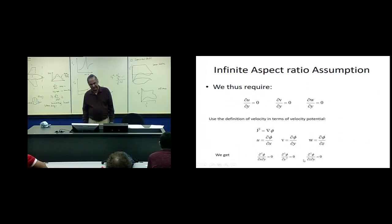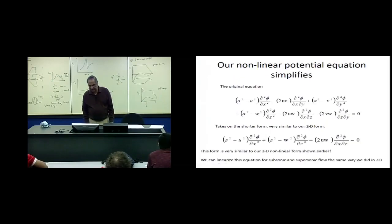Then our governing equation becomes, instead of a full six term equation, it has got x derivative, z derivative, and xz derivative. X is in the streamwise direction, z is perpendicular to the plane, y is along the span. This is what it is. This looks very similar to what we did before. So, we can use the same technique for linearizing it like we did in 2D.